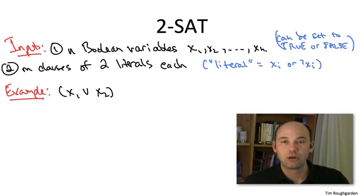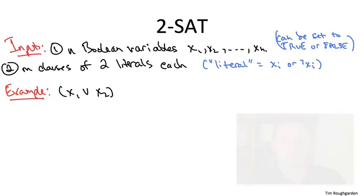What this clause means is that it's satisfied if either x1 is true or if x2 is true. The only way you can screw up satisfying this clause is by setting both x1 and x2 to false. The next clause has the form not x1 or x3.